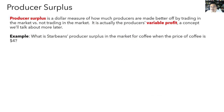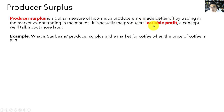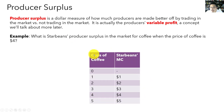Now let's talk about producer surplus. Producer surplus is a dollar-denominated measure of how much producers in the market are made better off by trading in the market versus not trading in the market. Since producers are typically profit-driven, producer surplus can be thought of as a measure of the producer's variable profits by participating in the market. There's a producer in the market for coffee called Star Beans, with a marginal cost schedule for producing coffee. We'll ask: what is Star Beans' producer surplus when the price of coffee is $4?